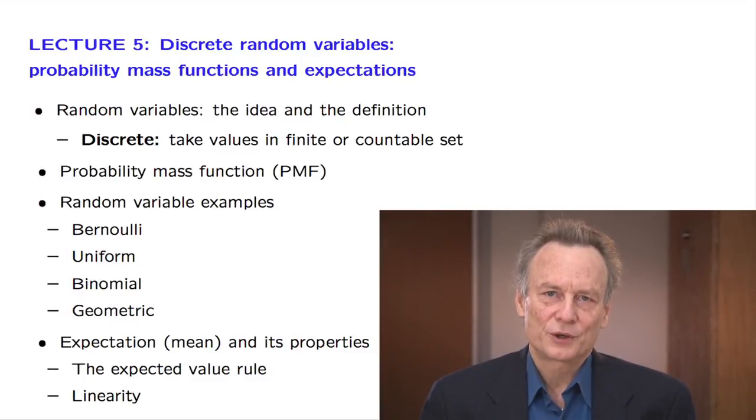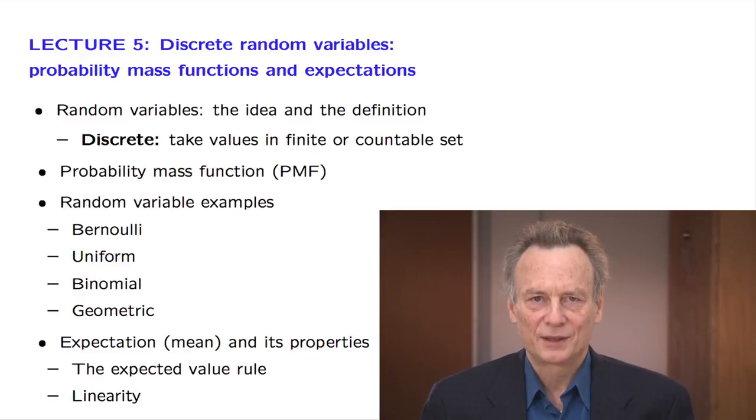In this lecture, we introduce the notion of a random variable. A random variable is, loosely speaking, a numerical quantity whose value is determined by the outcome of a probabilistic experiment. The weight of a randomly selected student is one example.